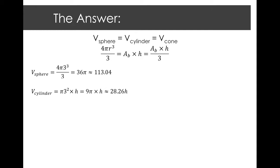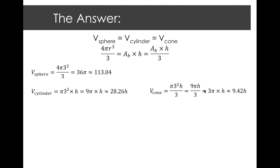For the volume of the cylinder, we plug in what we know. It's area of base times height, and remember the base of the cylinder is a circle, so the area of that base is pi r squared. I know r is 3, so if I plug that in, I get pi times 3 squared times h. Simplifying further, I get 9 pi times h, or approximately 28.26 times height. Then for the volume of the cone, the formula is area of base times height divided by 3. The cone's base is also a circle, so I have pi times 3 squared times height divided by 3, which simplifies to 3 pi times height, or approximately 9.42 times the height.